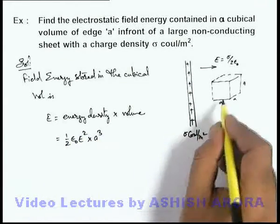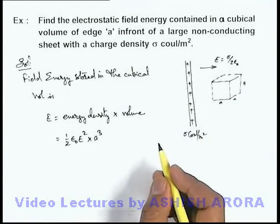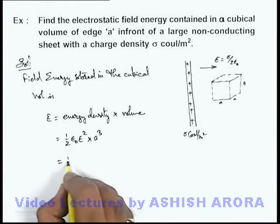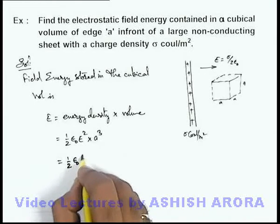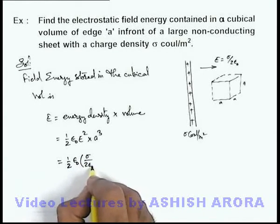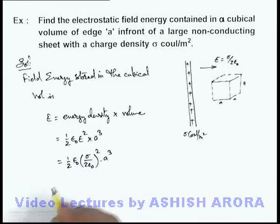In this situation we can substitute the value of electric field which is uniform. So this will be σ by 2ε₀ whole square multiplied by a³.